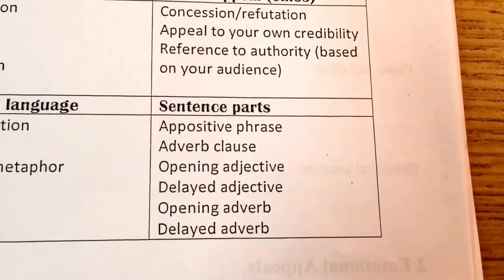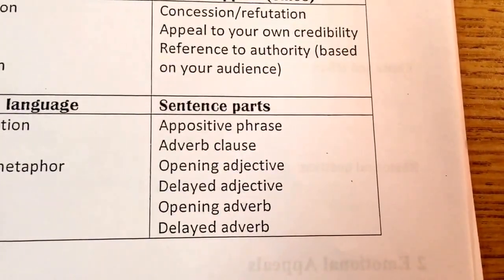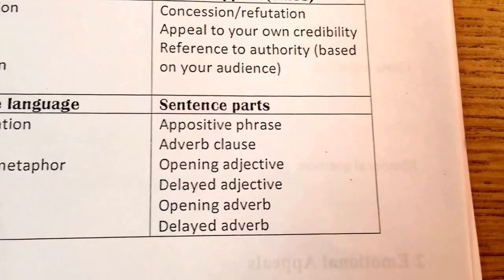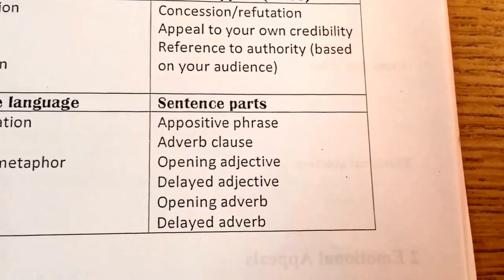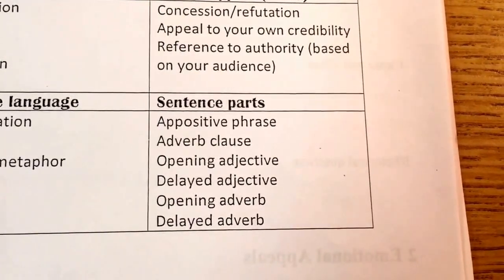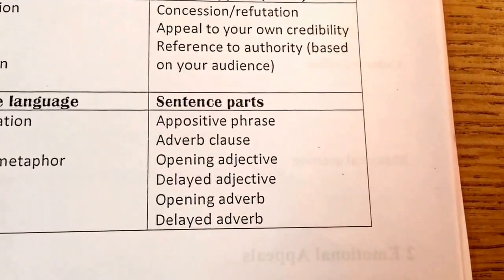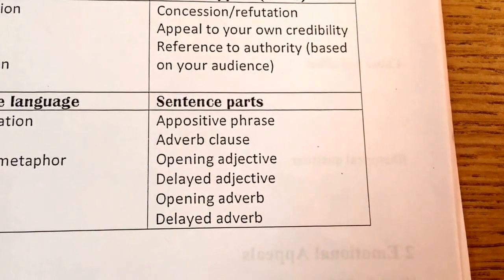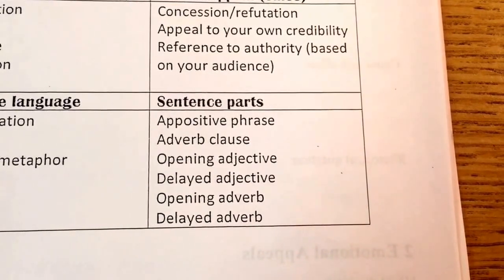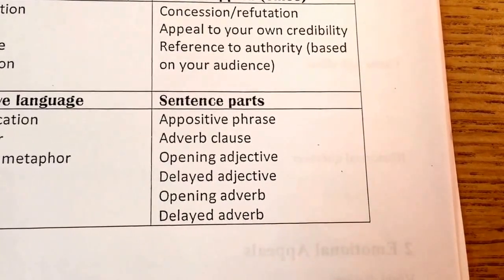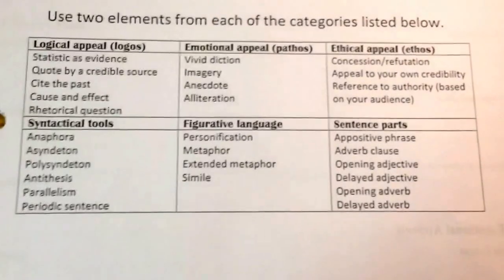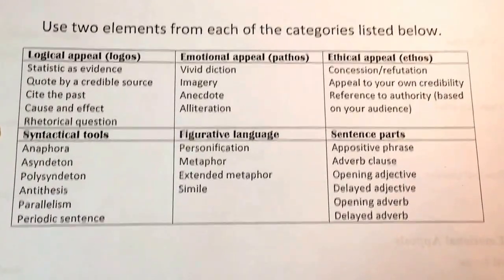And then the last category — you need two from this as well. These are some grammatical structures we've been working with: a participial phrase, or an adverb clause, opening adjective, delayed adjective, opening adverb, or delayed adverb. You just need two from each of these categories.